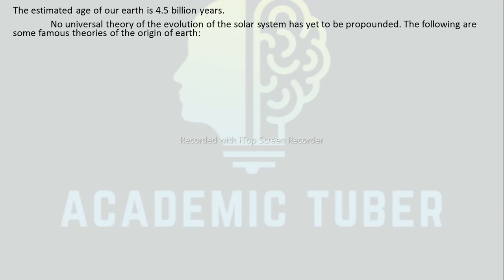We know that Earth is the only living planet in our solar system. It contains suitable conditions such as the presence of oxygen, water, suitable temperature, pressure, etc. for the survival of life. There are many undiscovered questions about the origin of Earth, and many scientists have put forward their views. The estimated age of Earth is about 4.5 billion years. No universal theory of the evolution of the solar system has yet been propounded. The following are some of the famous theories of the origin of the Earth.